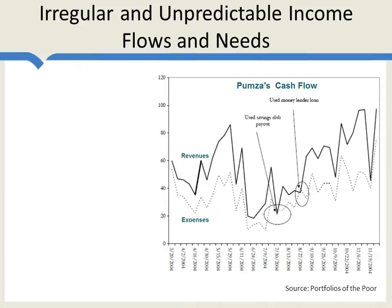Here's an example. This is Pumsa's cash flow. Pumsa is a woman who lives in South Africa and has four children. She makes her money by buying sheep's intestines, cooking them, and selling them on the street to passersby. What you can see is that the revenues from her business are really very variable — some days it rains, so she's not going to get a lot of passersby. Her expenses are also variable; sometimes when it rains she knows to buy less, so her expenses fall along with her revenues. At other times, however, her expenses exceed her revenues, and at these times she goes to a money lender for a brief loan or uses funds from a savings club.